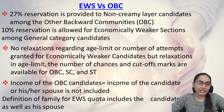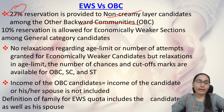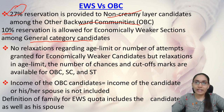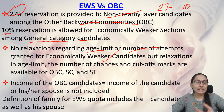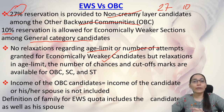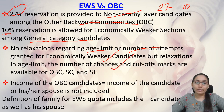Comparing EWS and OBC: OBC non-creamy layer — meaning economically backward OBCs — receive 27% reservation, while EWS receives only 10%. For OBC, SC, and ST candidates, there are relaxations regarding age limit, number of attempts, and cutoffs, but for EWS there are no such relaxations regarding age limit or number of attempts.